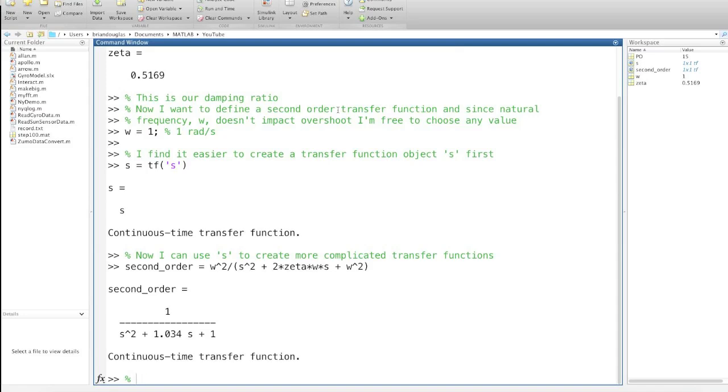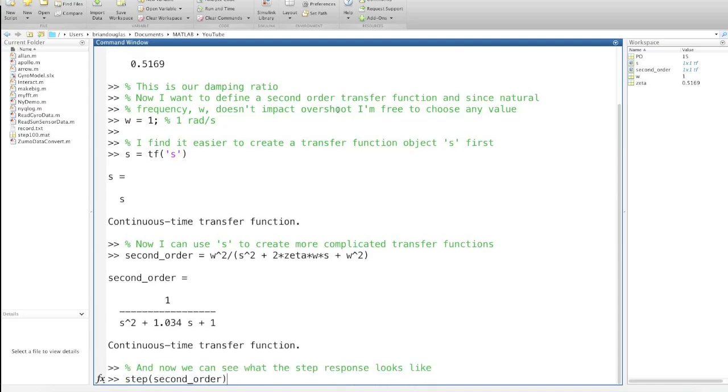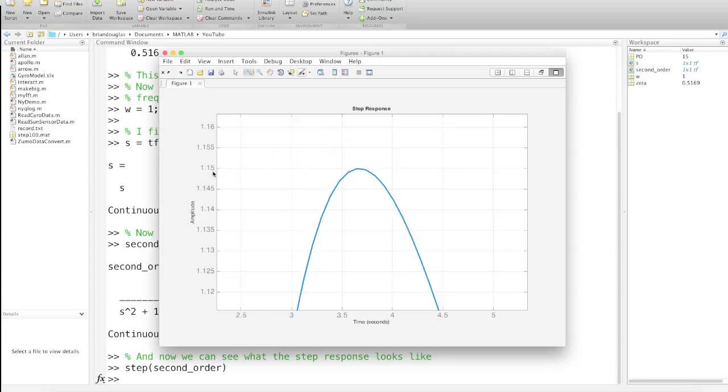Here I've generated a second-order transfer function using my calculated ζ and my chosen natural frequency. Cool, so that's what it looks like. Now we can see what the step response looks like for this transfer function. Perfect. Here you can see the step response starts at 0, and as we expected there is some amount of overshoot. If I zoom in you can see that there is indeed exactly 15% overshoot.